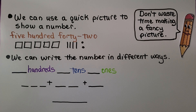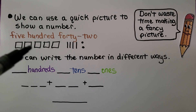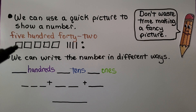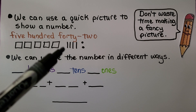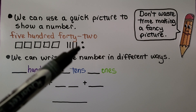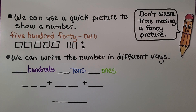We can use a quick picture to show a number. We have 542 — we make five squares for the five hundred, four lines for the four tens, and two dots for the two ones. We don't waste time making a fancy picture; we just make a quick drawing. And we can write the number in different ways.